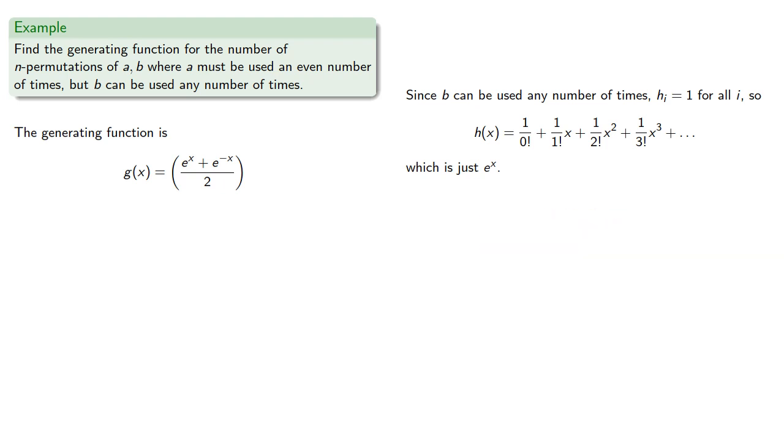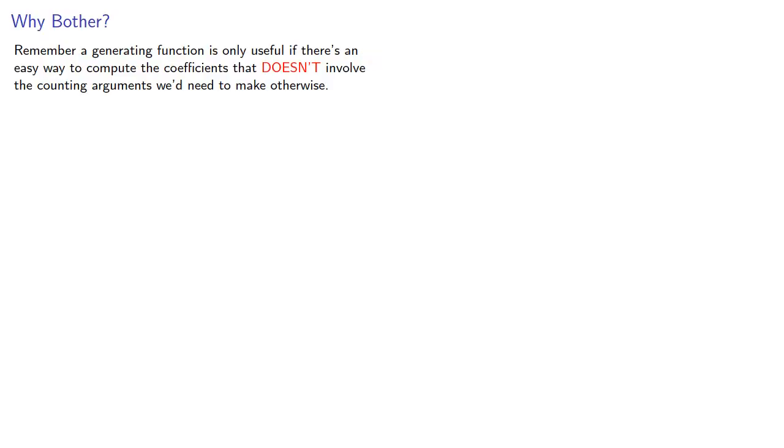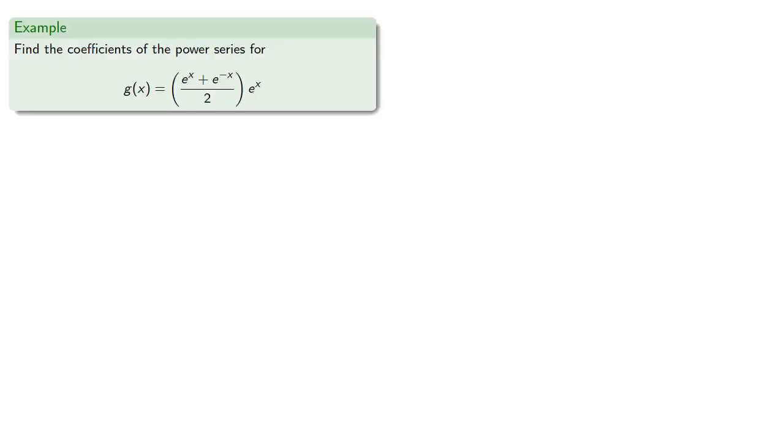And so if we multiply our two generating functions together, we get our generating function for the multiset. Now, remember, a generating function is only useful if there's an easy way to compute the coefficients that doesn't involve the counting arguments we need to make otherwise. Fortunately, we can rely on the calculus of power series. So let's find the coefficients of the power series for this product.